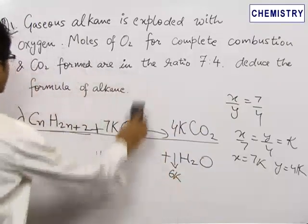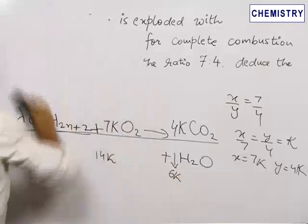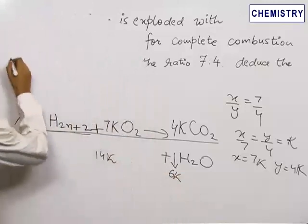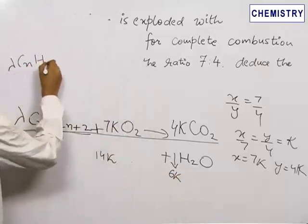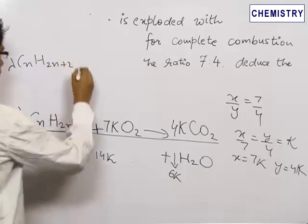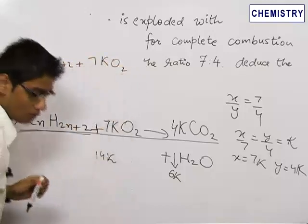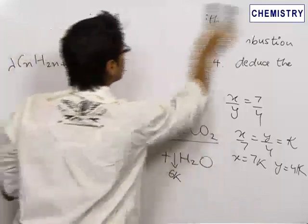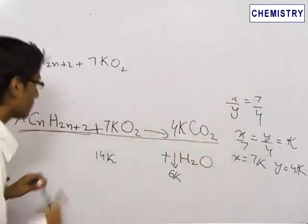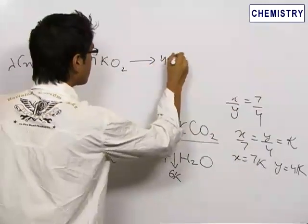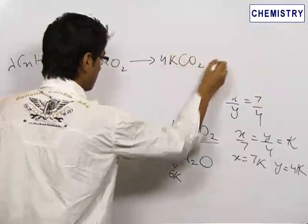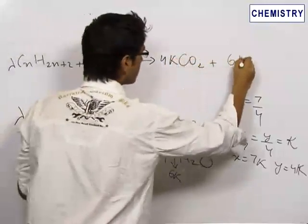So we rewrite the whole equation as lambda into CnH2n plus 2 plus 7k oxygen giving 4k CO2 plus 6k water.